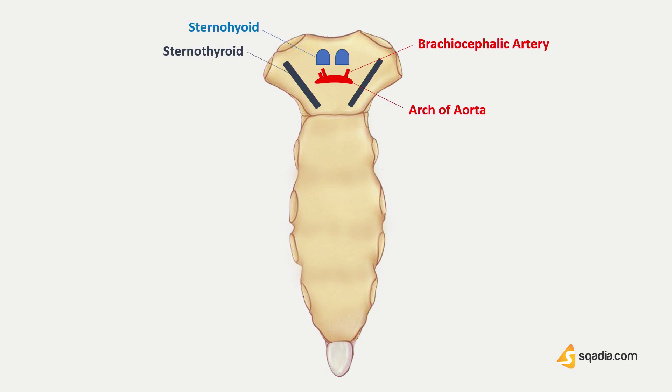the brachiocephalic artery, the left common carotid artery, and the left subclavian artery is related to the upper half.